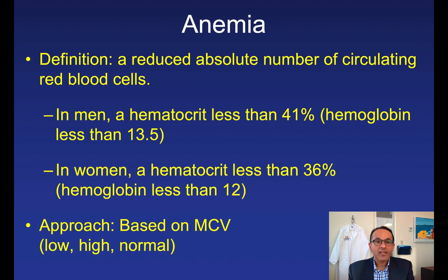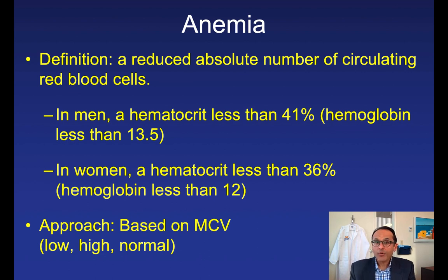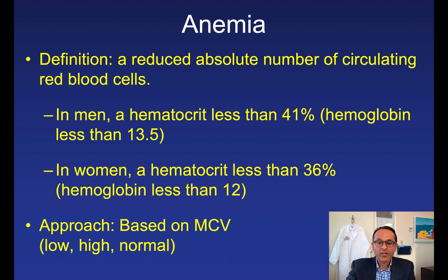Anemia is not a disease. Rather, it's a manifestation of an underlying disease, and our goal is to figure out what that underlying disease is. The best approach is to look at the mean corpuscular volume, or MCV, break it up into low, high, and normal, and then have a differential diagnosis for each one of those categories.